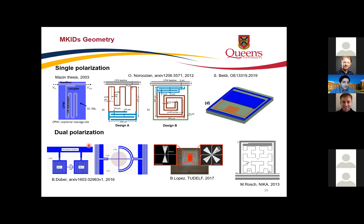Other MKID types are sensitive to dual polarization and were developed for the millimeter range in cosmic microwave background projects for B-mode detection. Different geometries include circular, butterfly, and Hilbert-curve types, all used for millimeter-range astronomy in projects such as NIKA.